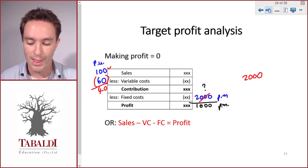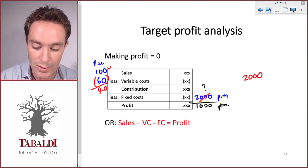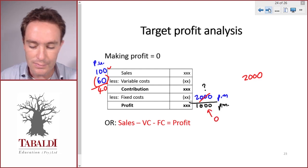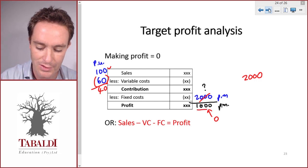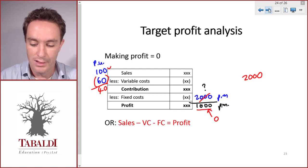But now, if we only sell enough units to cover the fixed costs, we won't make any profit, and we don't want that. We want to make a profit of $1,000.